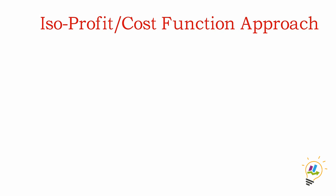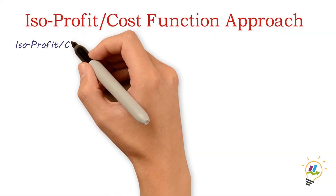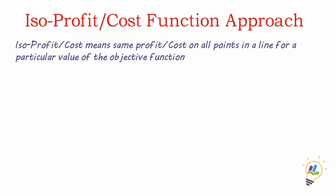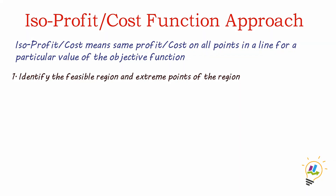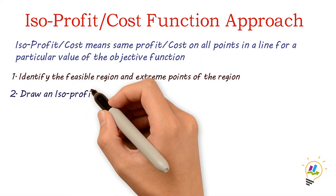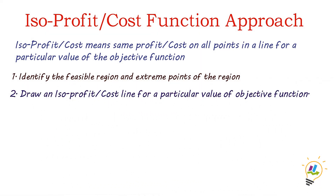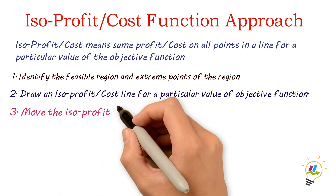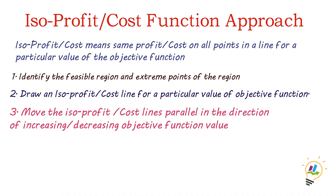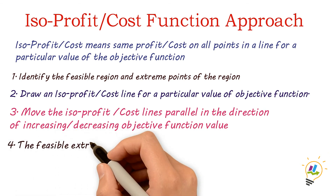Isoprofit or Cost Function Approach: Isoprofit or Cost means same profit or cost on all points in a line for a particular value of the objective function. 6. Identify the feasible region and extreme point of the region. 7. Draw an isoprofit or cost line for a particular value of the objective function. Move the isoprofit or cost line parallel in the direction of increasing or decreasing objective function value.